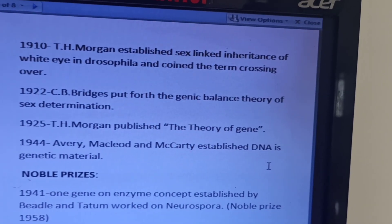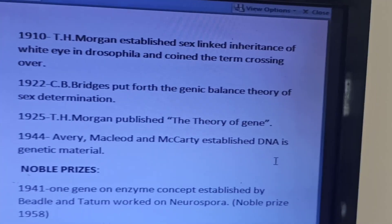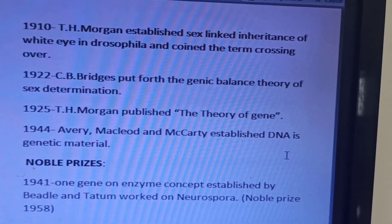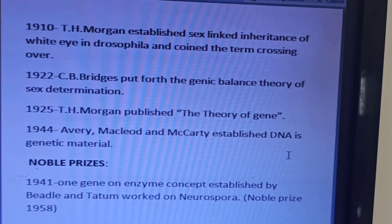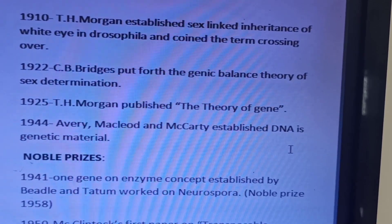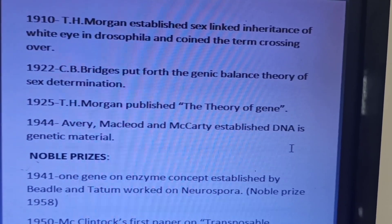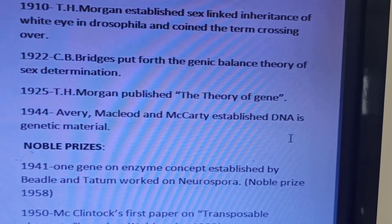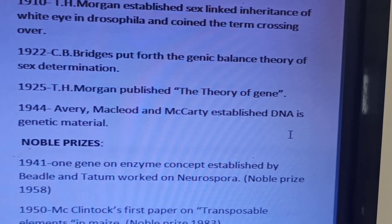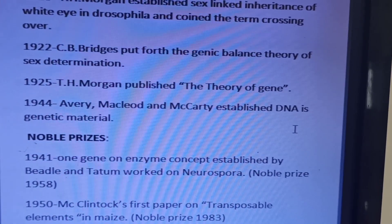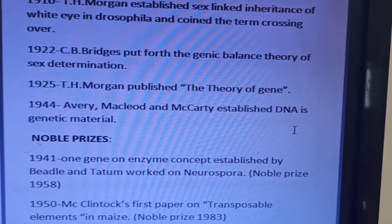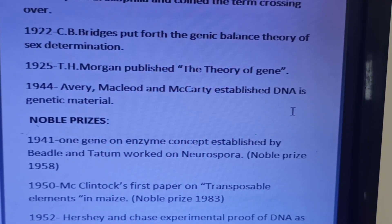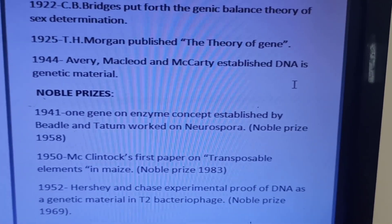In 1910, T.H. Morgan established sex-linked inheritance by studying white-eye in Drosophila, and he also coined the term crossing over. In 1922, C.B. Bridges put forward the genic balance theory of sex determination. In 1925, T.H. Morgan published the theory of the gene. In 1944, Avery, MacLeod, and McCarty established DNA as the genetic material — a very frequently asked question.